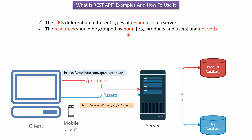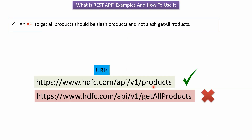Resources should be grouped by noun and not by verb. In this example, the nouns are products and users. If you want to get all the products, then the API URI should end with slash products — this is the correct way. We should not use a URI like slash get-all-products — that is the wrong way.